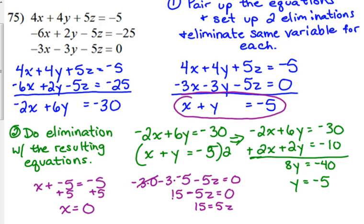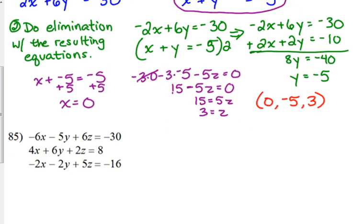So our solution, 0, negative 5, positive 3. Here's an example of where we did not find the variables in order, or in alphabetical order. We found y first, but remember, y comes second. So, 0, negative 5, positive 3. And again, it's an equation. You could plug that into either one of those first two to check and make sure that that is the correct answer.